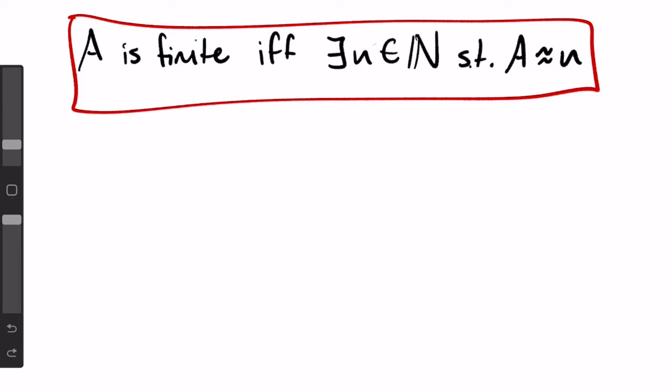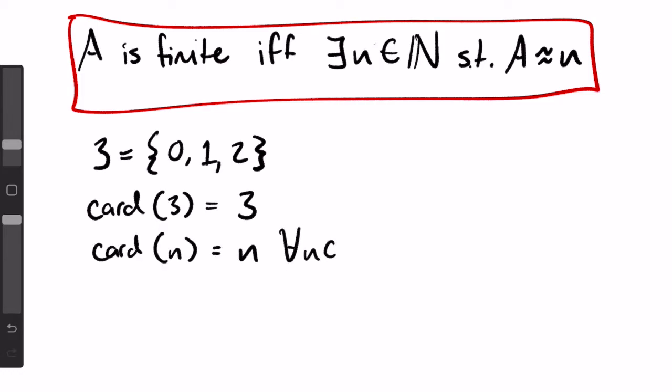For a refresher on the natural numbers, click on the card to watch Lesson 6, or recall that we have defined each natural number as the set of all the natural numbers before it. For example, 3 equals a set of 0, 1, and 2. Now, we see one huge reason why this definition of natural numbers is useful. If 3 is a set of 0, 1, and 2, then the cardinality or size of the natural number 3 is simply 3. In fact, for every natural number n, the cardinality of n is simply n.